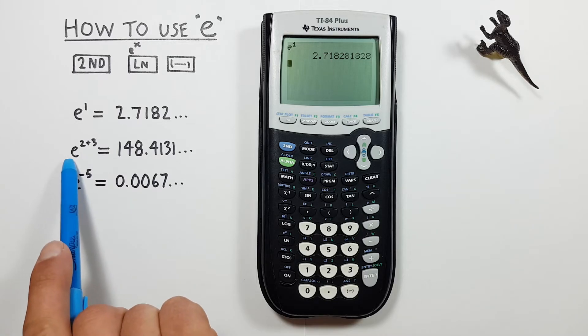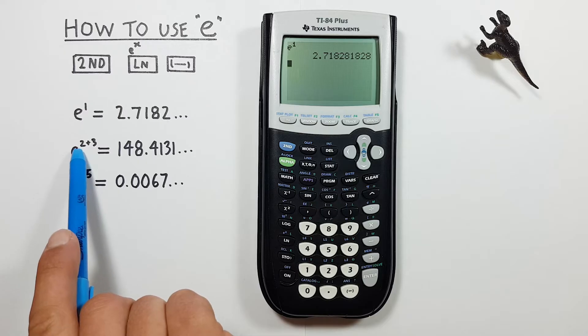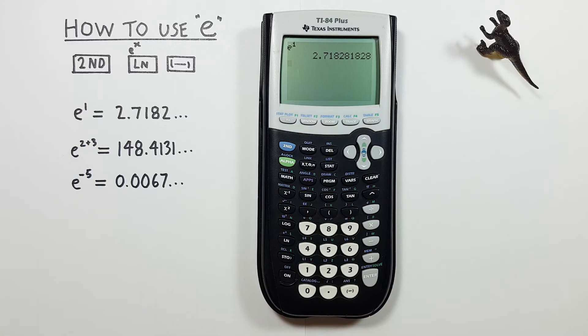We can also enter more complicated exponents, like let's say our exponent for e is 2 plus 3. Again, to do this, we start by pressing second.